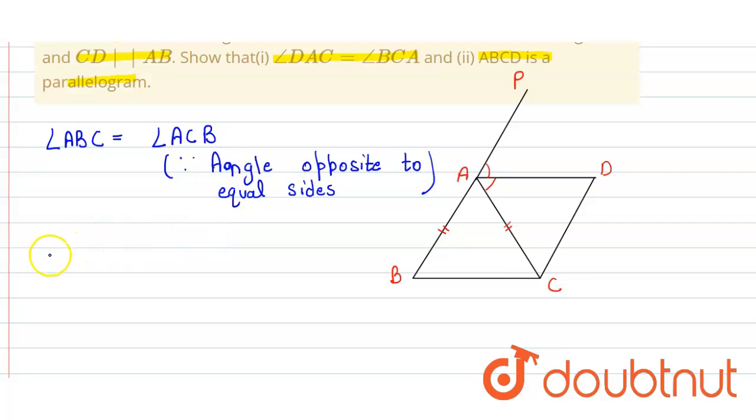Now we know that the exterior angle will be equal to the sum of these two interior angles. So here we apply that angle PAC is equal to angle ABC plus angle ACB. So angle PAC can be written as twice of angle CAD because these both angles are equal.